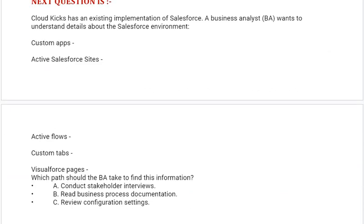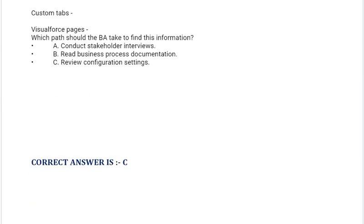Next question: CloudKix has an existing implementation of Salesforce. A business analyst BA wants to understand details about the Salesforce environment: custom apps, active Salesforce sites, active flows, custom tabs, and Visualforce pages. Which path should the BA take to find this information? Option A: Conduct stakeholder interviews. Option B: Read business process documentation. Option C: Review configuration settings. Correct answer is Option C.